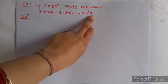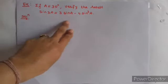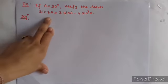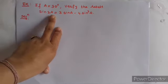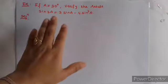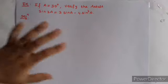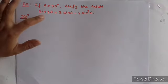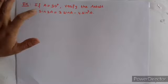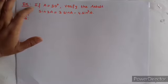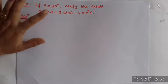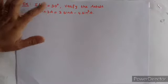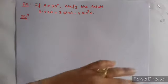It is not necessary that only theta appears in the question paper — in place of theta, it can be a, b, alpha, beta, or gamma. Any symbol can appear. So here we have 3a. If a equals 30 degrees, then the angle value is 30 degrees. Verify the result.